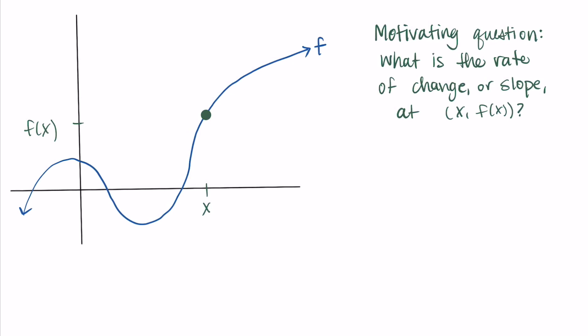Okay, so we want to compute the rate of change at any point x with the output f of x. So to do this, we're going to do our best and approximate the rate of change at that point. We're going to pick another point and make a line going through the point we're interested in and this new point we just drew.